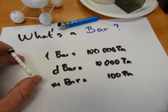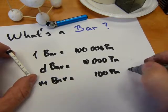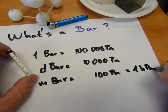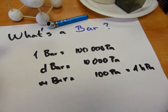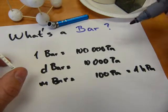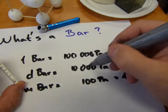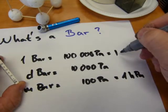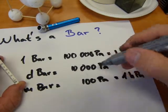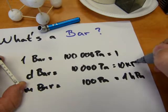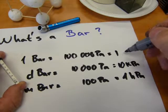100 Pascal is the same as one hectopascal because hecto means 100. That one doesn't have a name, that's 10 kilopascals.